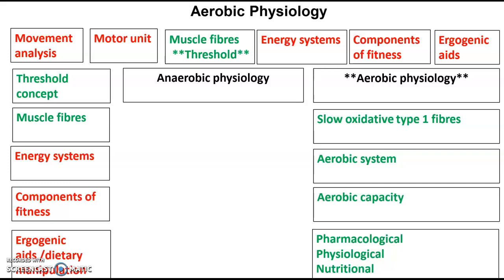Then we had a look at training types, and that's the key thing really — thinking of high intensity interval training or continuous training as two methods by which a marathon runner could improve their fitness by applying the FIT principle. If they train using the FIT principle to improve their VO2 max and aerobic capacity, what are the adaptations they will get? Our focus is going to be on the adaptations based around aerobic training.